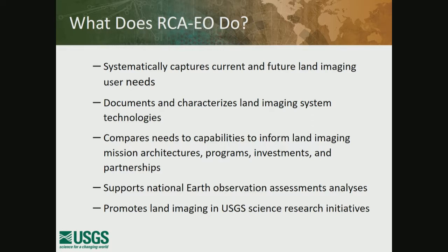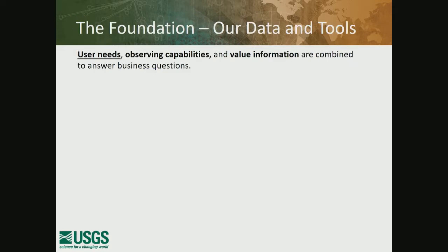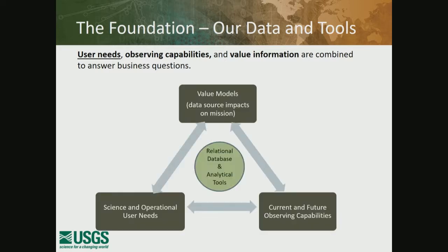We capture user needs, characterize a variety of systems — U.S. government, foreign, and commercial — and do comparisons to allow architecture study evaluations and inform investments. The Earth Observation Assessment work Emily described was used as a basis for building out user needs data for early Landsat 10 formulation. At the center of our approach is a relational database and analytical tools, shared with NOAA TIPIO. Around that we have three datasets: information about benefits and value models of data sources, information on capabilities, and user needs. We compare needs to capabilities to determine the comparative benefits of a particular satellite solution.